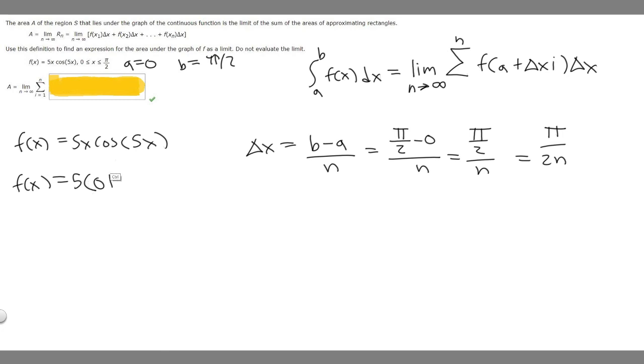Then we have the delta x, and we already know what delta x is. It's π/2n. Then we multiply it by i, so (π/2n)·i. Then we have the cosine of 5, then x again, we just plug in the same thing. So (π/2n)·i.